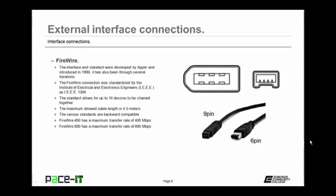USB 1.1 has a maximum transfer rate of 12 megabits per second. USB 2.0 was a vast improvement with a maximum of 480 megabits per second. USB 3.0 has a theoretical maximum of 5 gigabits per second. For USB 1.1 and 2.0, the standard calls for different physical connectors — A connectors and B connectors, each with mini and micro versions. USB 3.0 has its own connector standard, usually colored blue. Now let's move on to FireWire, developed by Apple and introduced in 1999. FireWire was standardized by the IEEE as the IEEE 1394 standard, allowing up to 16 devices to be chained together with a maximum cable length of 4.5 meters. All IEEE 1394 standards are backwards compatible. FireWire 400 has a maximum of 400 megabits per second, and FireWire 800 has a maximum of 800 megabits per second.